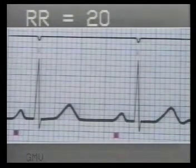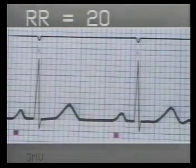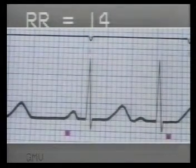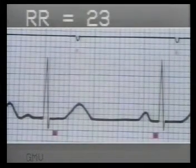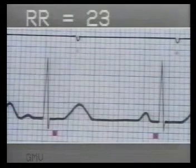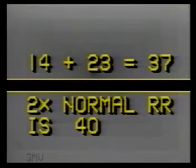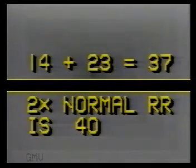To study the compensatory pause, count each RR interval. The first normal RR interval is 20 small squares. The RR interval of the premature beat is 14 small squares, and the RR interval of the compensatory pause is 23 small squares. The two added together — 14 plus 23 — is 37 small squares. Whereas it should have been exactly two times the normal RR interval of 20 small squares, that is 40 small squares. So this is an incomplete compensatory pause.